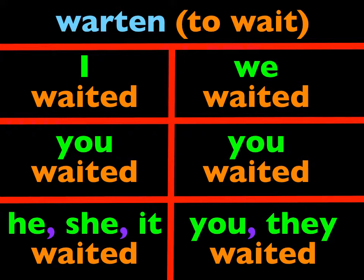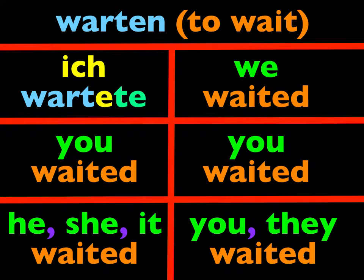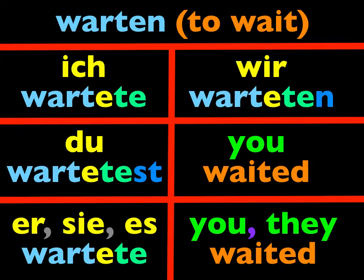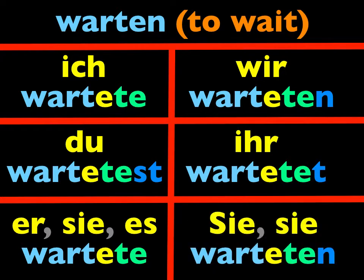It does sound a little strange: ich wartete, du wartetest, er wartete, wir warteten, ihr wartetet, und sie warteten. I know it sounds strange, almost as though you were stuttering a bit. Repeat them all after me: ich wartete, du wartetest, er wartete, wir warteten, ihr wartetet, sie warteten.